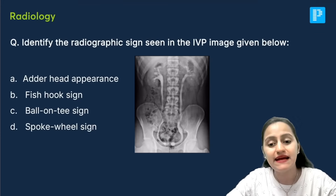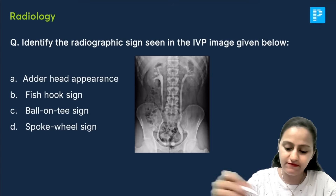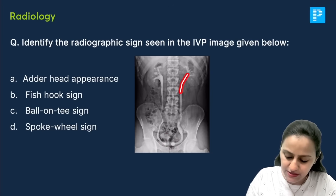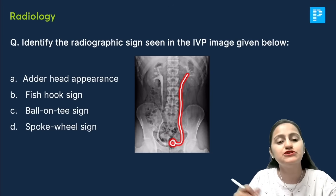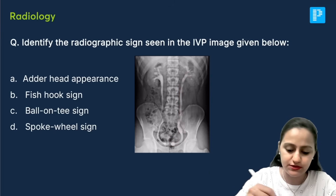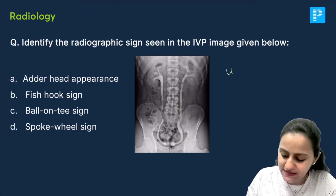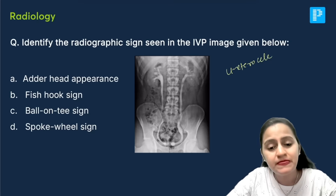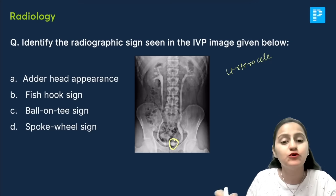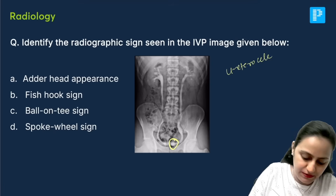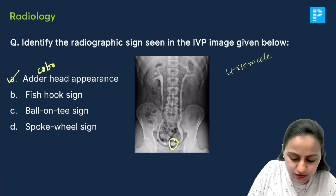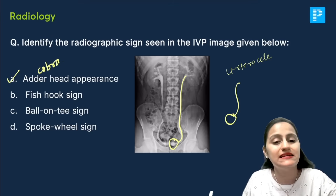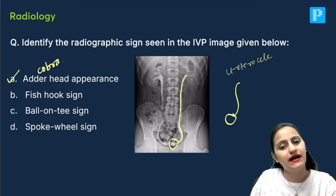The first question asks to identify the sign shown in the IVP image. This is the IVP image showing the ureter and the dilatation of the ureter at its insertion, which is called ureterocele. If the diagnosis had been asked, this is ureterocele — a very frequently asked question. The sign being asked here is called cobra head or adder head appearance. The ureter is like a cobra and you are seeing the head-like dilatation, so cobra or adder head appearance.